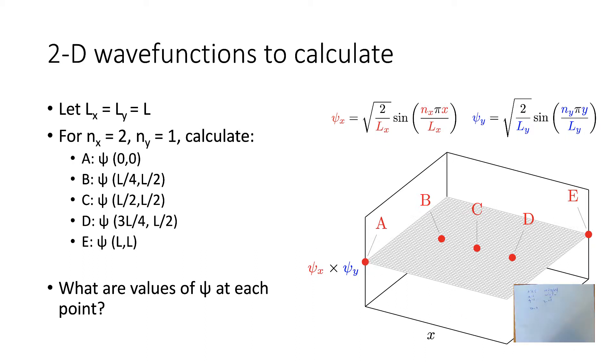By the same token, we can say that E is at the other side of the box. It's also at the edge of the box. It conforms to the boundary condition. So ψE, we would expect to be 0 as well. That's 2 dealt with very quickly and easily.